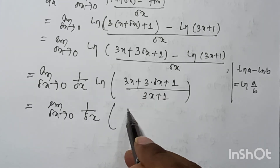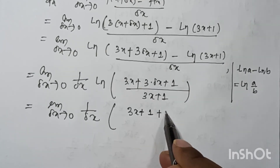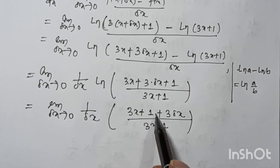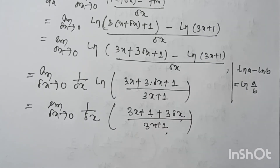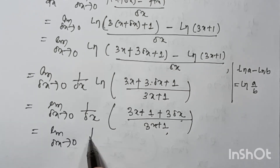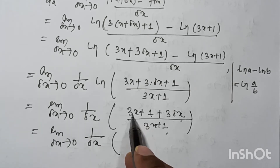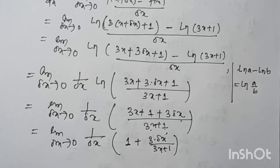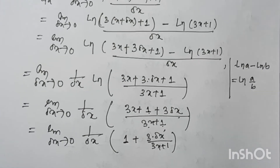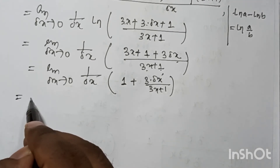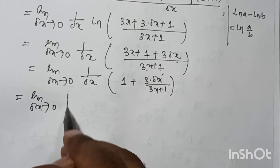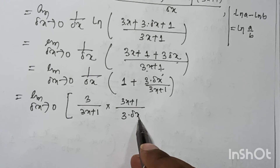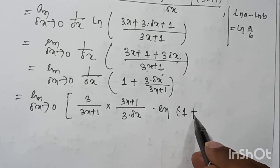We rewrite the argument as: (3x + 1 + 3δx) divided by (3x + 1), which equals 1 plus (3δx)/(3x + 1). So we have: limit as δx tends to 0 of [3/(3x+1)] times [(3x+1)/(3δx)] times ln(1 + 3δx/(3x+1)).